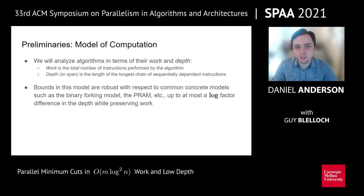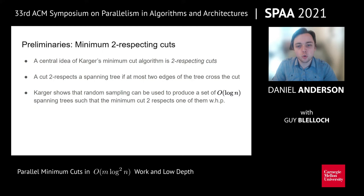We're also going to need this idea of minimum two-respecting cuts, which is a central idea in Karger's algorithm and all the other algorithms in this line of work. We say that a cut two-respects the spanning tree if at most two edges of the tree cross the cut. Karger's algorithm is based on this idea, where he shows that random sampling can be used to produce a set of log n spanning trees such that the minimum cut two-respects at least one of them with high probability.